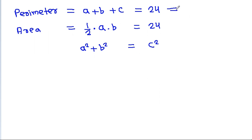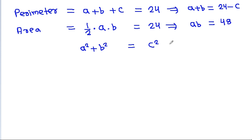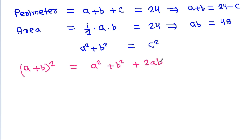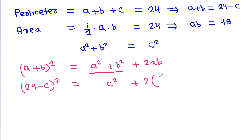From the perimeter equation, A plus B is equal to 24 minus C. From the area equation, A times B is equal to 48. We know that A plus B squared is equal to A squared plus B squared plus 2AB. So, A plus B squared gives us 24 minus C squared equal to C squared plus 2 times AB, which is 48.